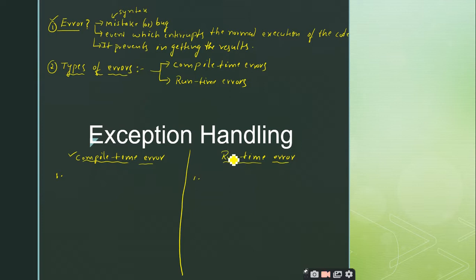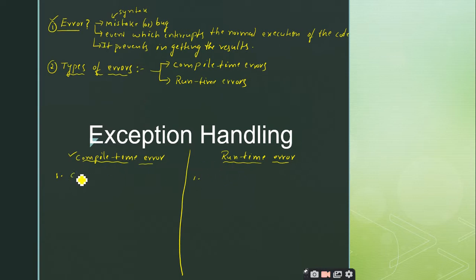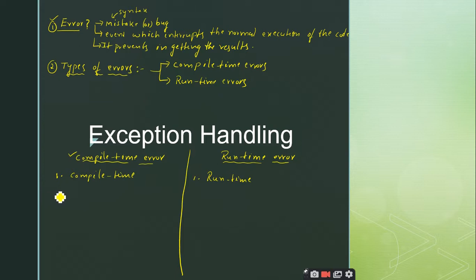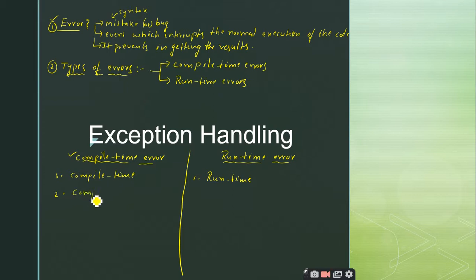Coming to runtime errors: these errors occur after successful compilation. They occur once you are executing or running the code, which is a process that takes place after compilation. So after successful compilation, you may get some errors during execution — such errors are called runtime errors. The compile-time errors are given by the compiler. Who is going to throw the compile-time errors? The compiler.